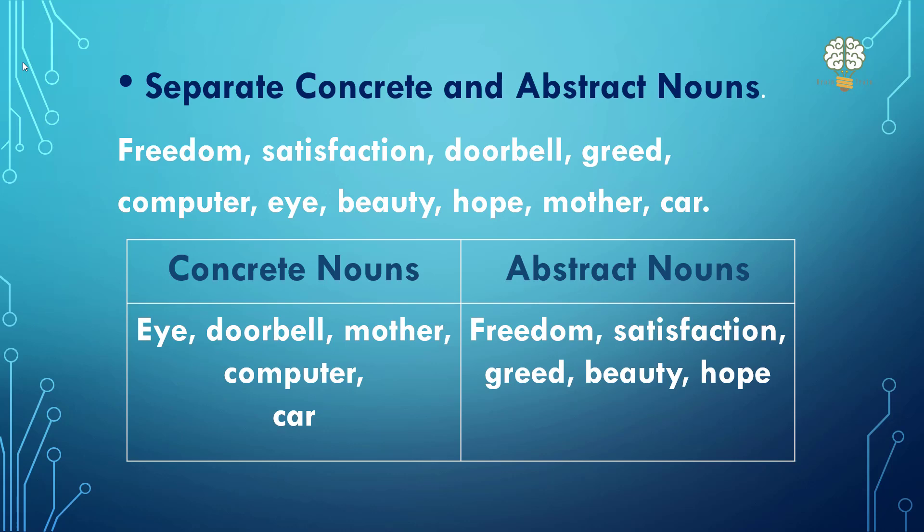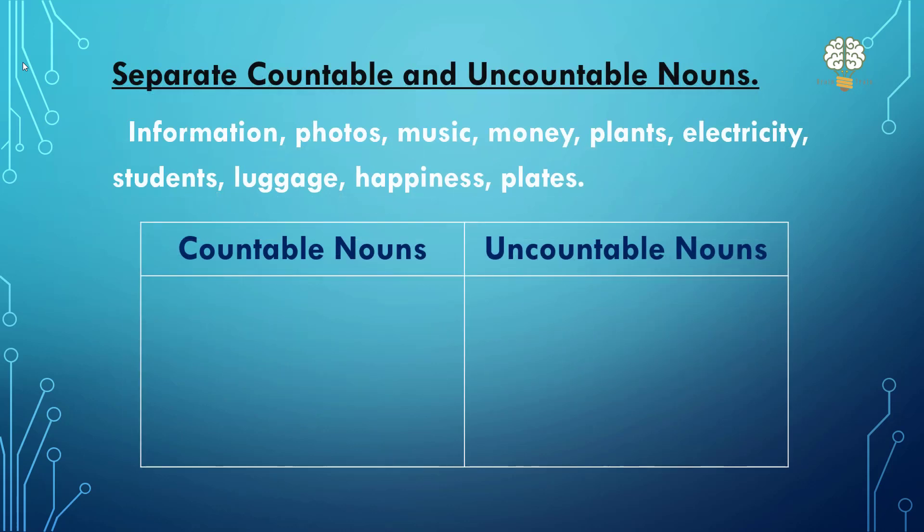Next, let's move on. Now you have to separate countable and uncountable nouns. The words are: information, photos, music, money, plants, electricity, students, luggage, happiness, and plates. Again, pause the video and check.